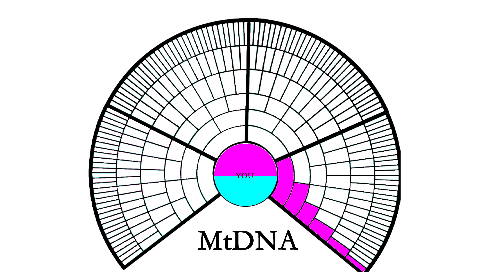The next thing is mtDNA — mitochondrial DNA. This is only passed down from woman to woman, just like the male Y-DNA. Unlike the male, which only passes to males, mitochondrial DNA passes from female down to female, but it also goes from female down to male. Since the males don't pass it along, on the chart it looks the same — female to female to female — even though it also goes to the males. That can be a bit confusing.